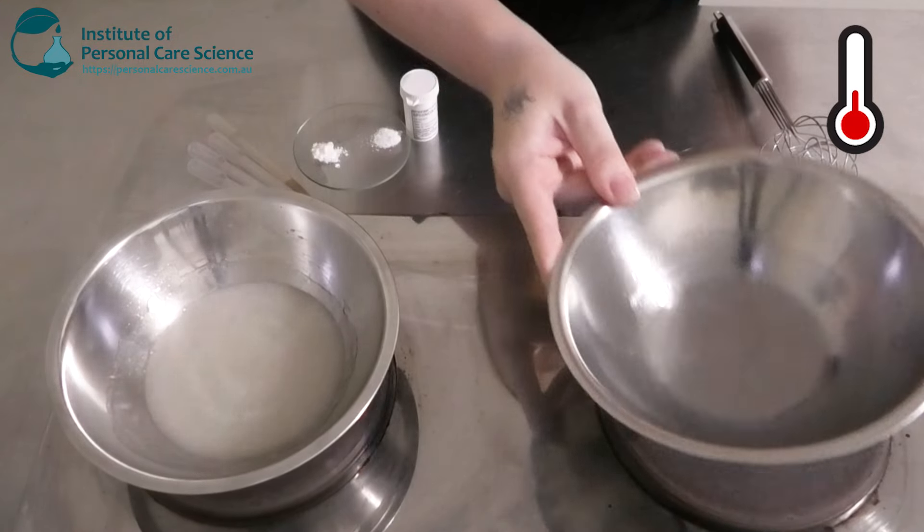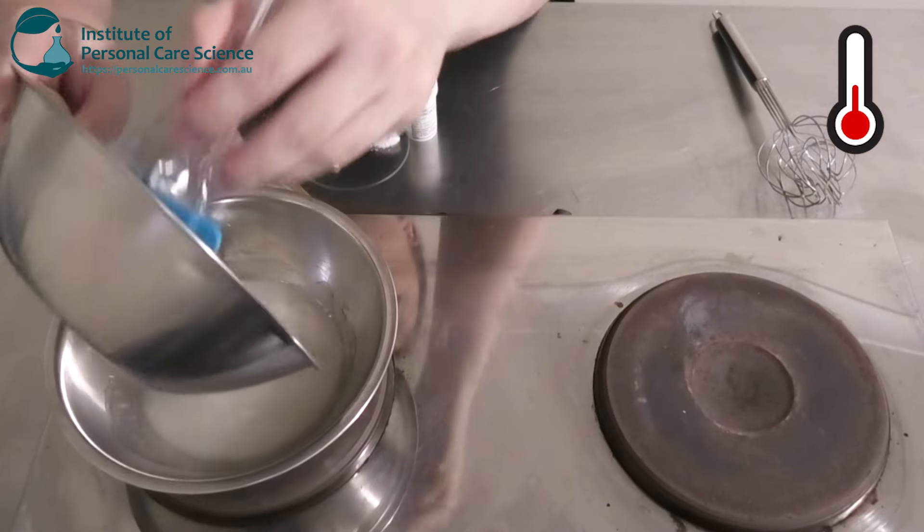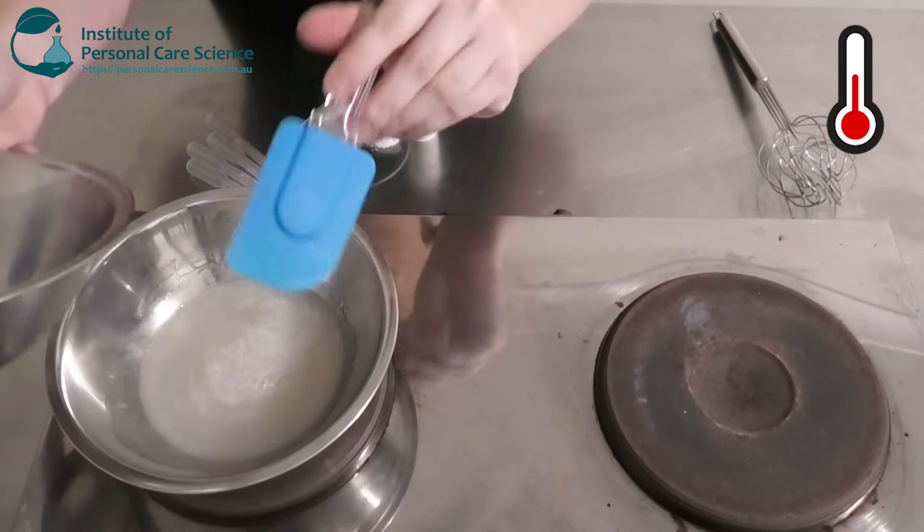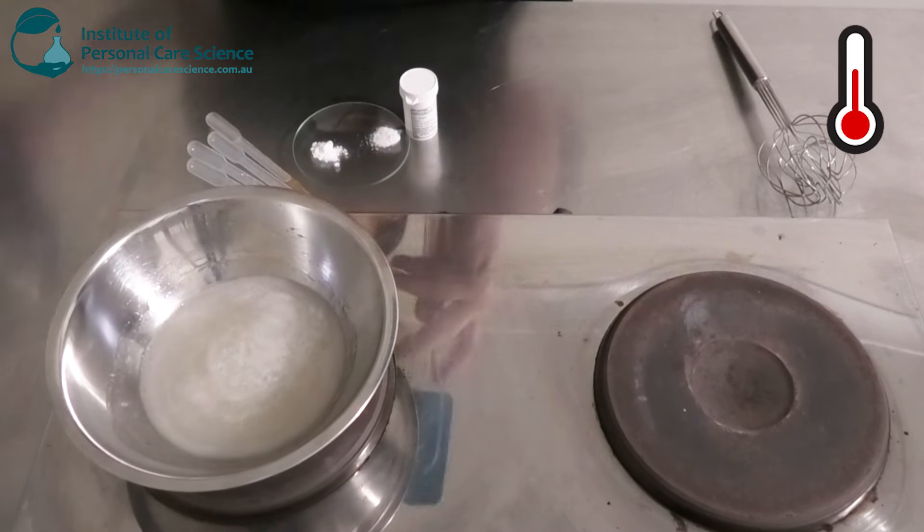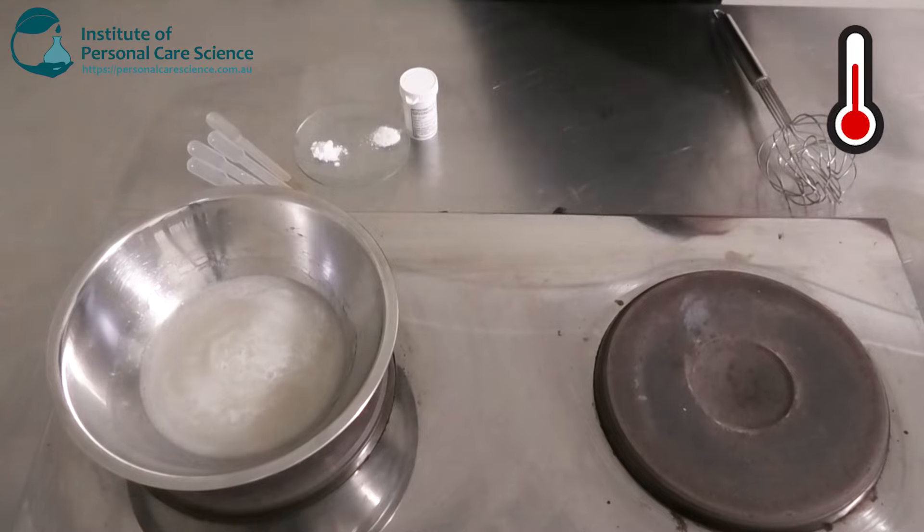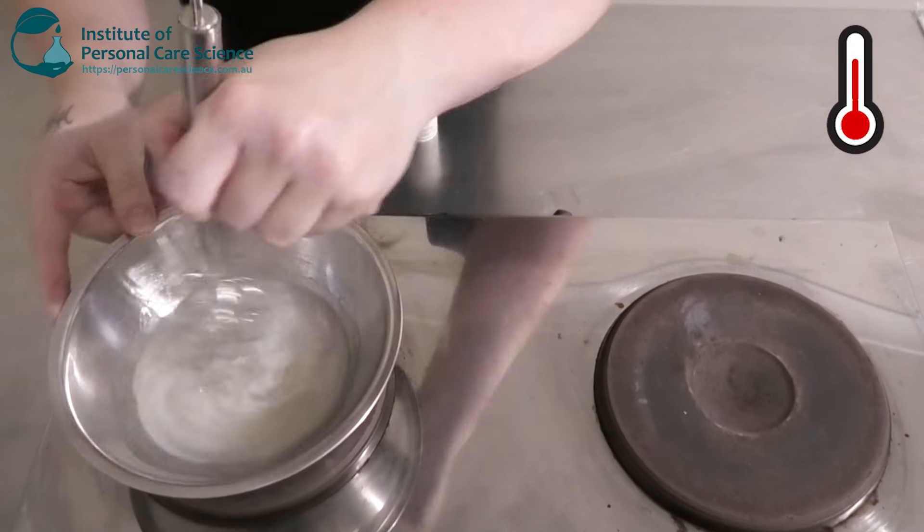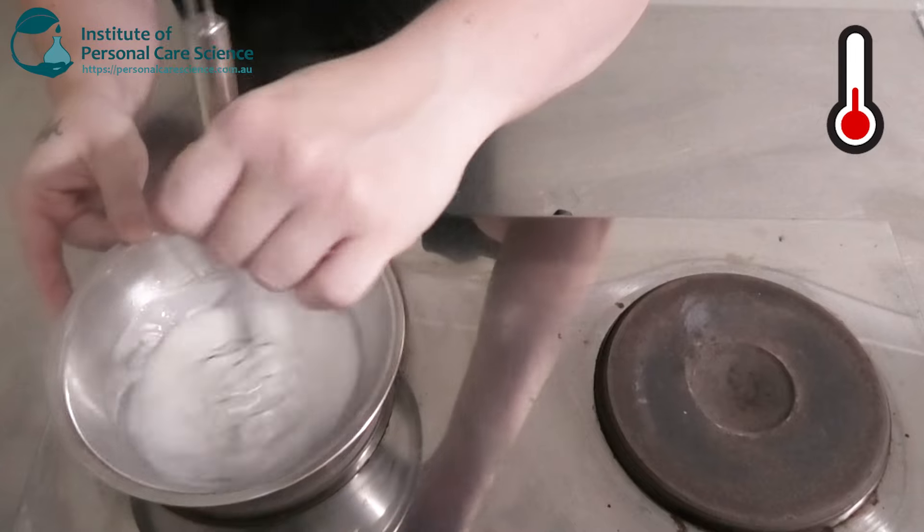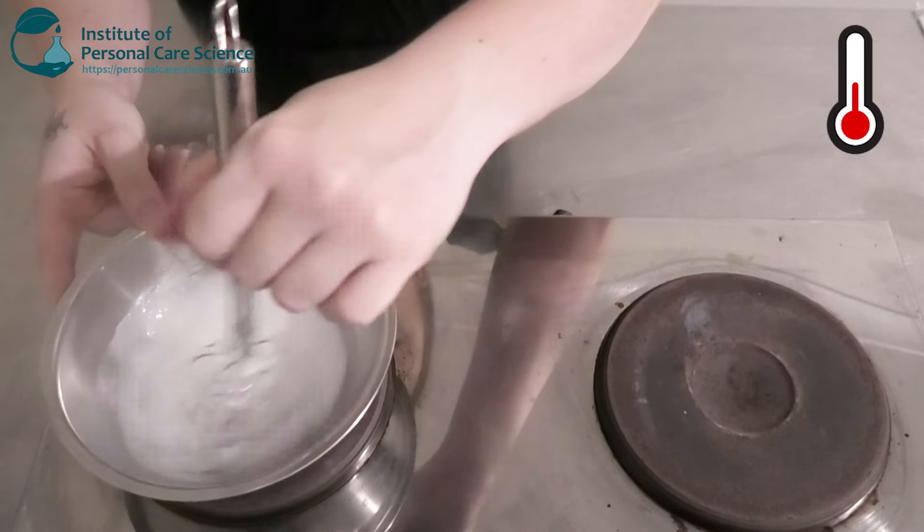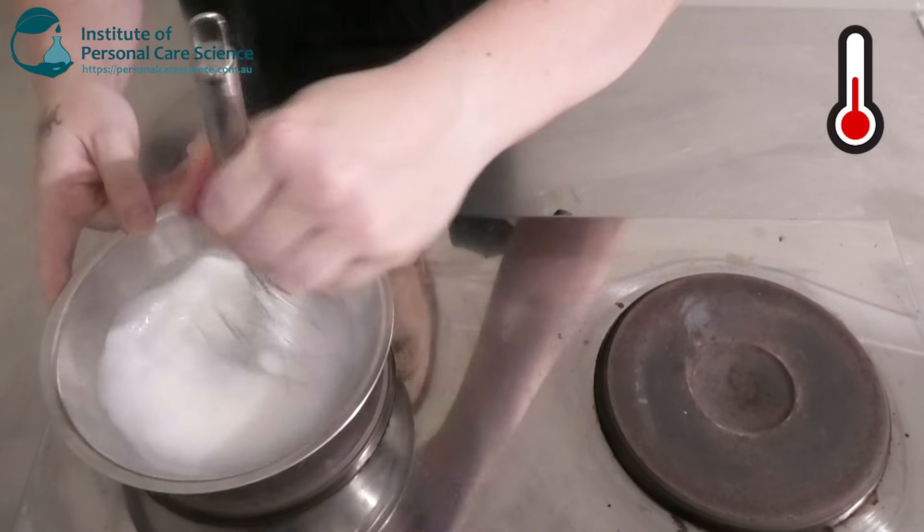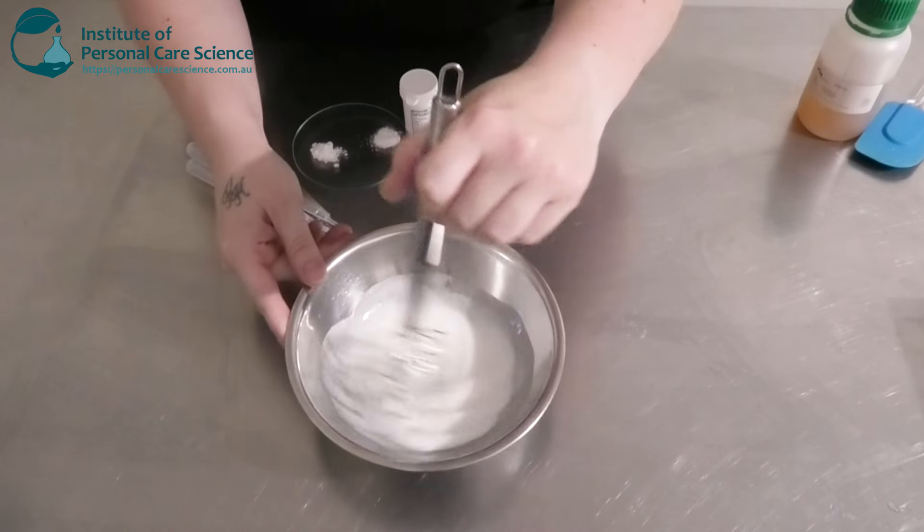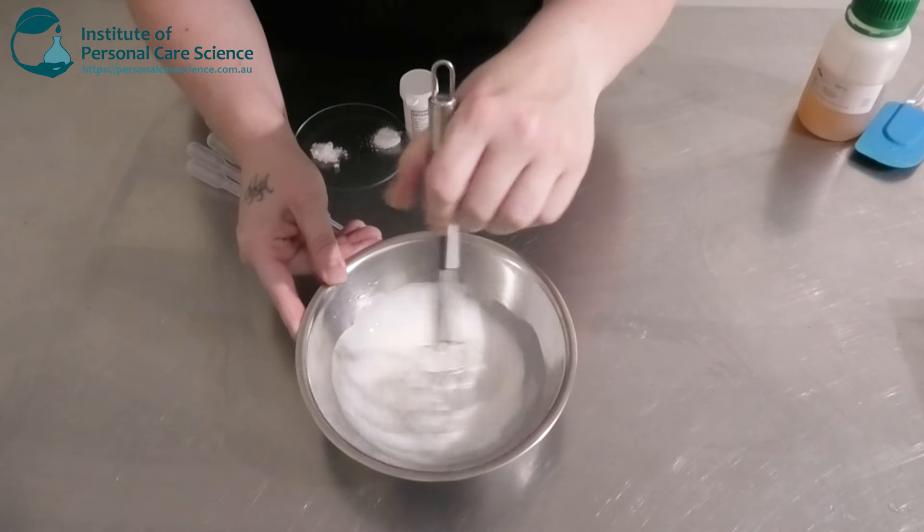Okay once our oil phase is all melted we're going to put that into our hot water phase. You need to ensure that your water phase is hot enough before adding your oil phase otherwise the waxy emulsifier won't stay molten when combined and you will get what we call waxy water which is really hard to get rid of so you generally need to start again. Okay so nice emulsion has formed now. We're going to remove that from the heat and we're just going to keep stirring to cool that.